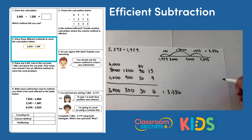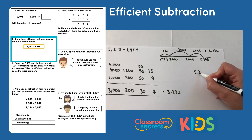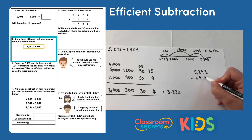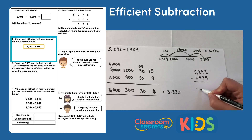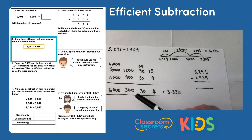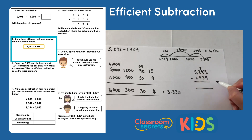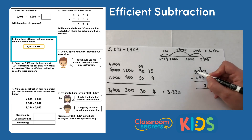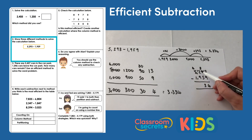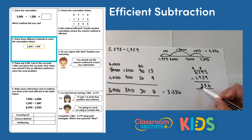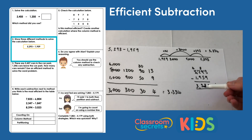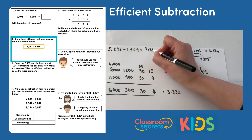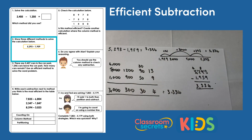The final method is the formal column method. We write out the calculation again. Three take away nine we can't do, so we exchange: thirteen take away nine is four. Eighty take away fifty is thirty, shown as three. Two hundred take away nine hundred we can't do, so we exchange: twelve hundred take away nine hundred is three hundred. Then four thousand take away one thousand is three thousand. We've shown three ways that the answer is three thousand three hundred and thirty-four.